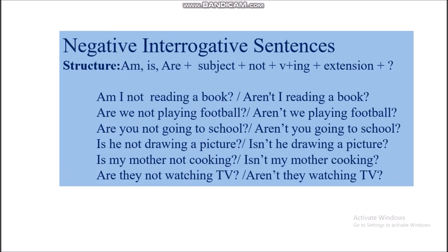Negative interrogative sentences. Structure: Am, is, or are, plus subject, plus not, plus verb ing form, plus extension, plus question mark. Examples: Am I not reading a book? Or, aren't I reading a book? Are you not playing football? Or, aren't you playing football? Are you not going to school? Or, aren't you going to school? Is he not drawing a picture? Or, isn't he drawing a picture? Is my mother not cooking? Or, isn't my mother cooking? Aren't they watching TV?